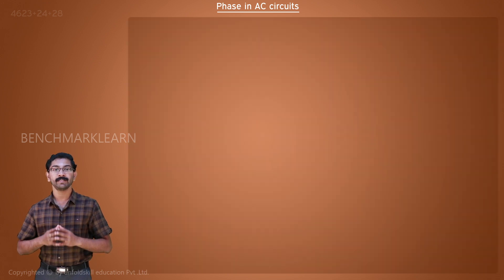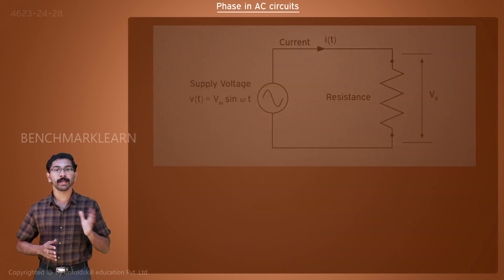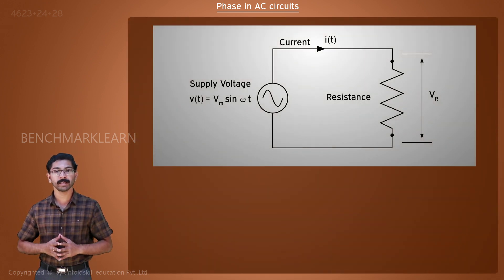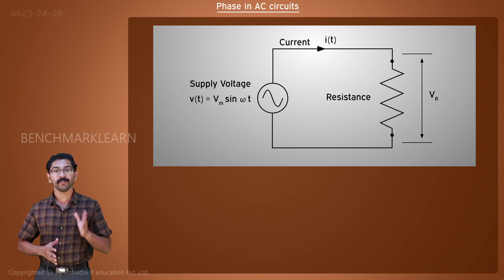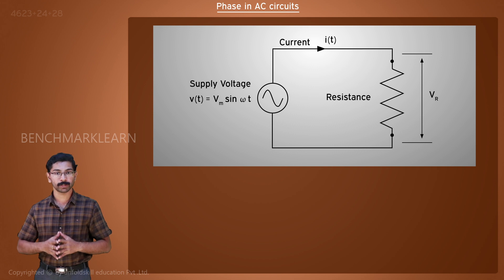Phase in AC circuits. We have here a resistor and a voltage source. When we connect the resistor to this voltage source, current will flow through it.